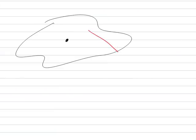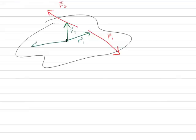Where this becomes more interesting is in 3D. Say we have some kind of a blob, and this blob has several forces acting on it — these are all 3D forces. We have some R1, F1 going on; we have some R2, F2 going on; and we have some R3, F3 going on.